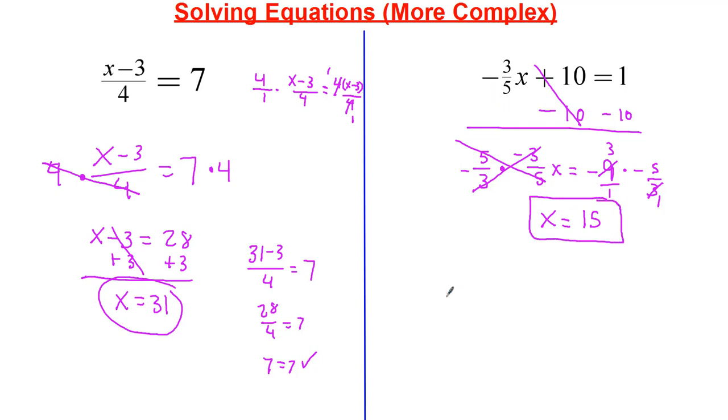So I'm just going to go ahead and plug in, see if this makes sense. So negative 3 fifths times 15. Put that in parentheses. I'm just going to turn it into a fraction now. So we have... I'm going to cross-cancel this. 5 goes into 5 one time, 5 goes into 15 three times. So negative 3 times 3 is negative 9. So negative 9 plus 10 is equal to 1. Yeah, that's definitely true. 1 is equal to 1. So yeah, that is correct.